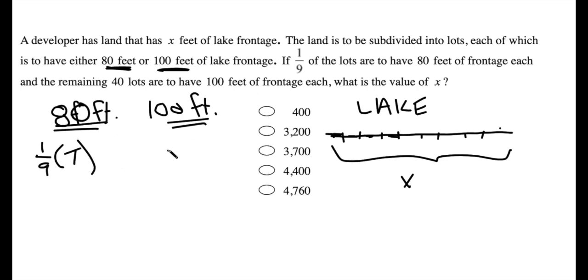Before I go any further, I'm just going to say, well, that means that eight-ninths of the lots, eight-ninths of the total, are 100-foot lots, right? Because if one-ninth are the first type, that means that the remainder must be the second type, eight-ninths.